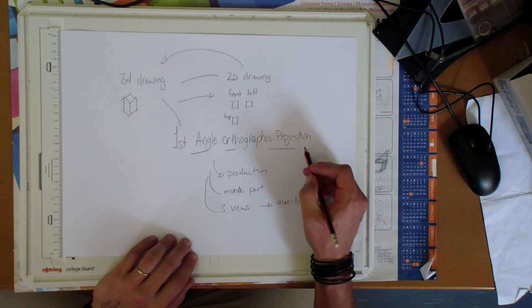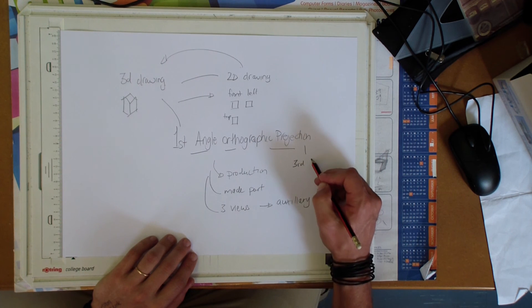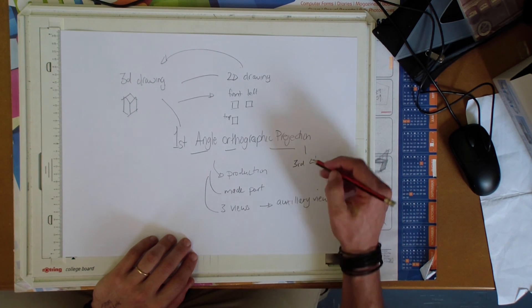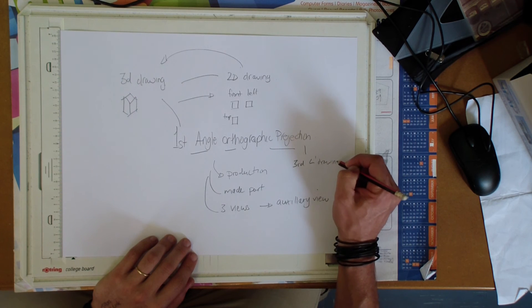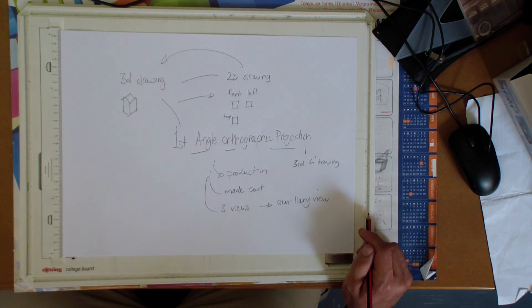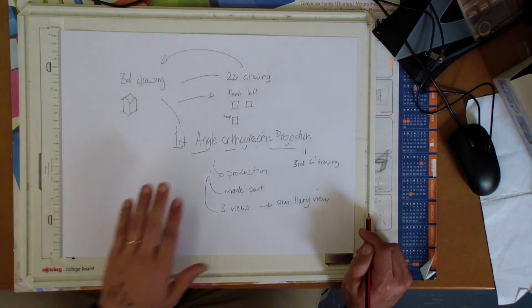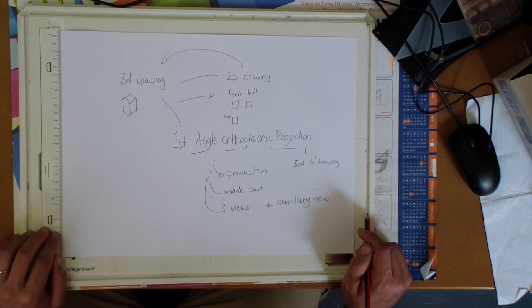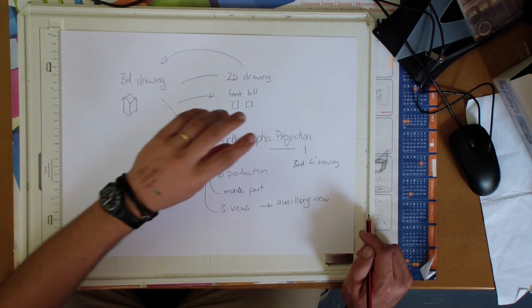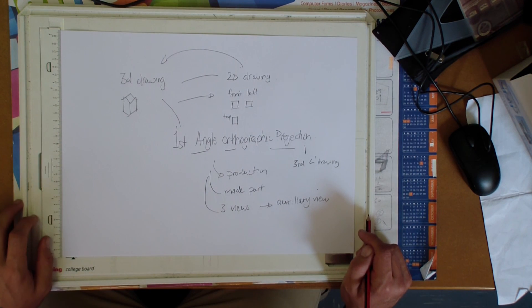I take note that there is also third angle drawings. We won't be looking at those today or in grade 8 or in grade 9. We're just going to focus on first angle orthographic projection. So, we're going to take a 3D drawing and take it to a 2D space and we're going to practice this format right now.